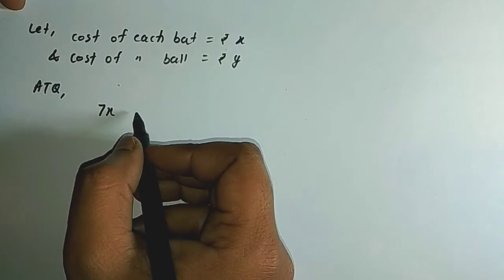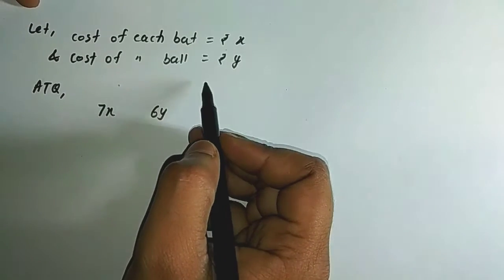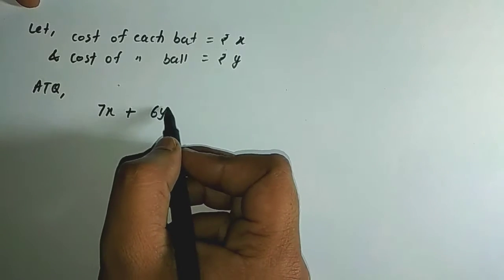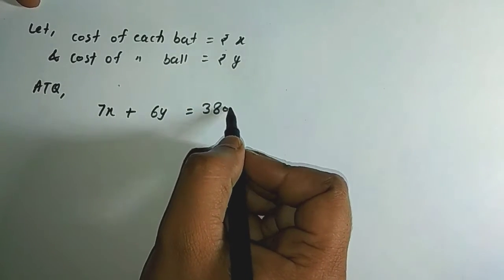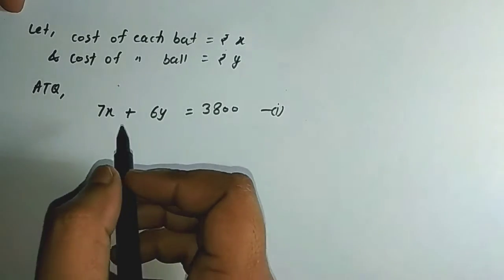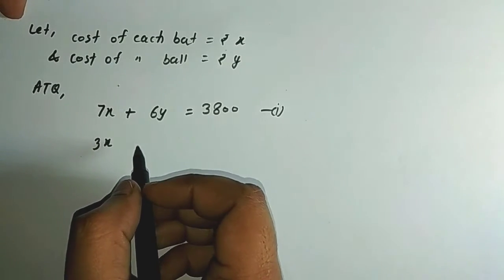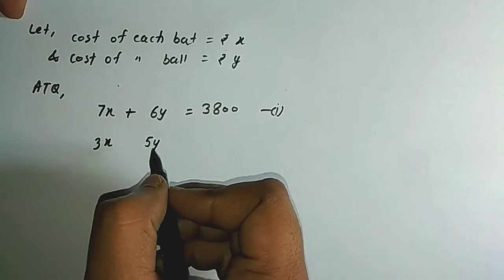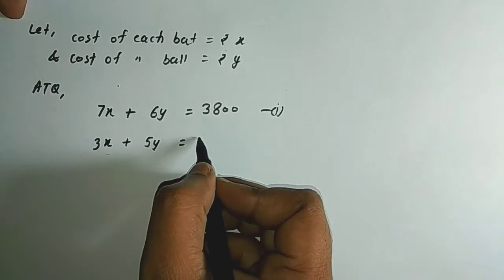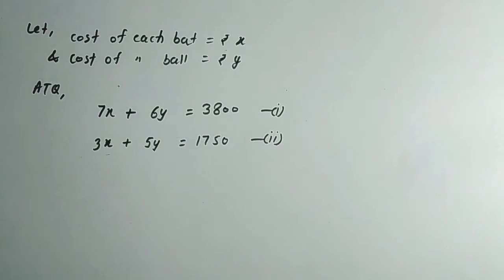The cost of 7 bats is 7x. The cost of 6 balls — since one ball costs y, for 6 balls it will be 6y. The total cost of 7 bats and 6 balls is given as Rs.3,800. So the first equation is: 7x + 6y = 3800. The second condition says 3 bats cost 3x, and 5 balls cost 5y, with total cost Rs.1,750.